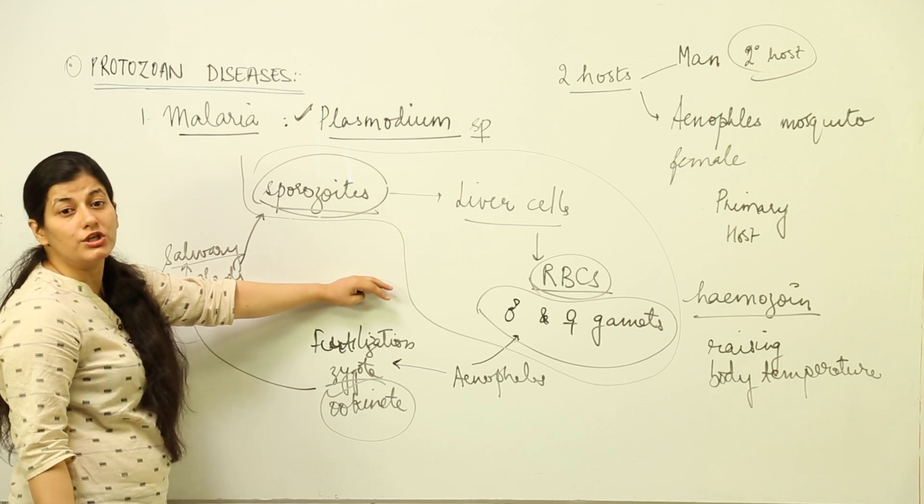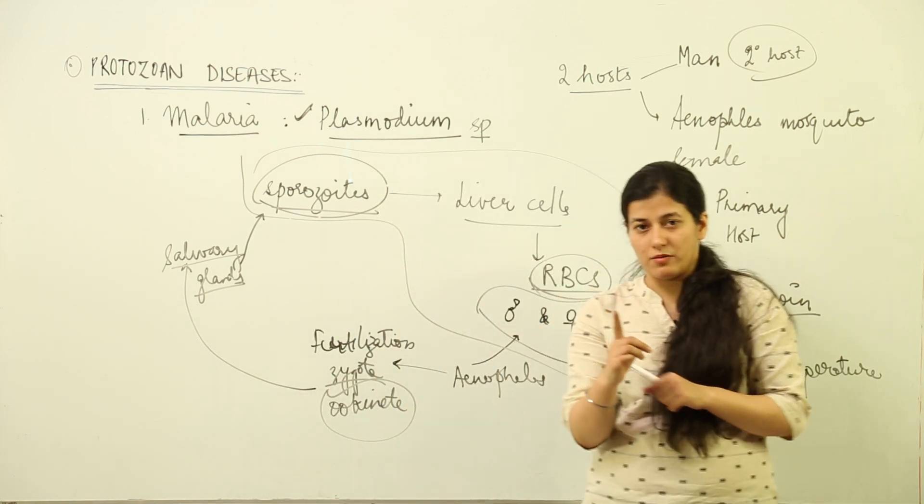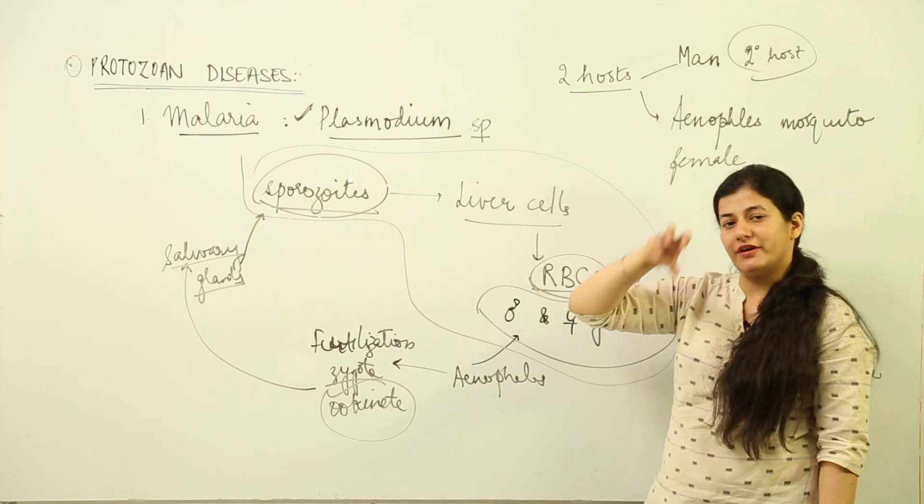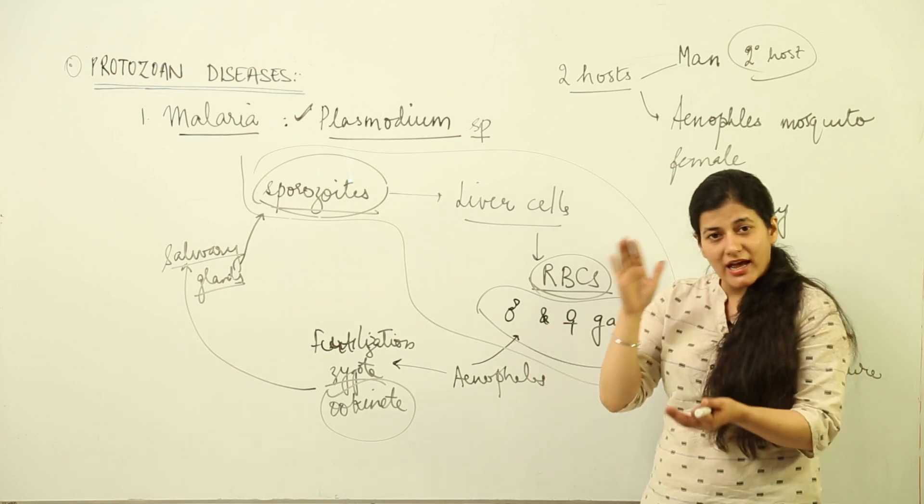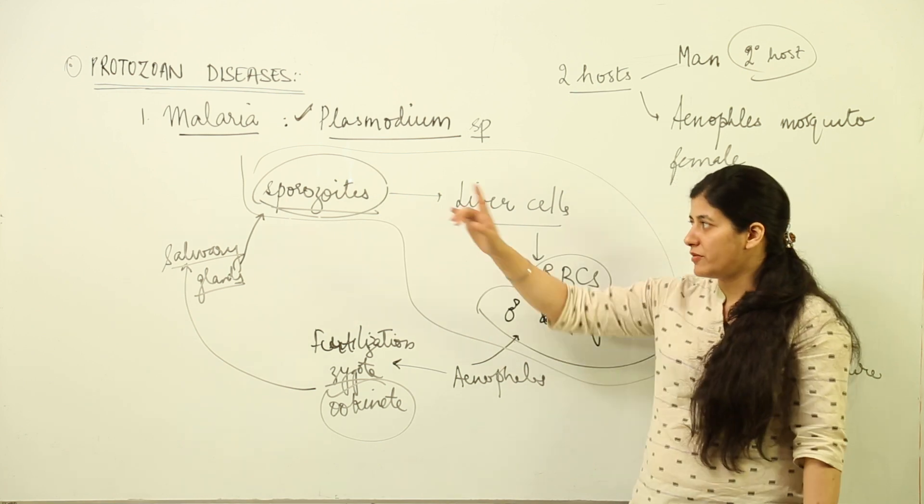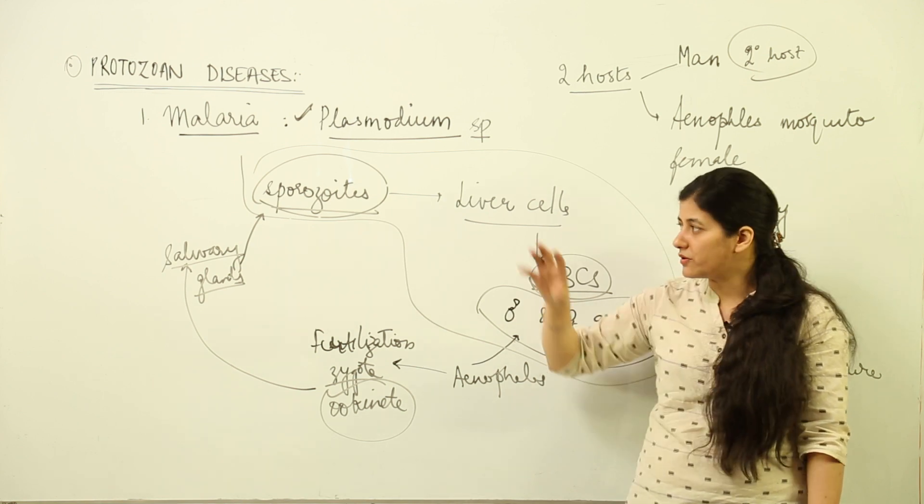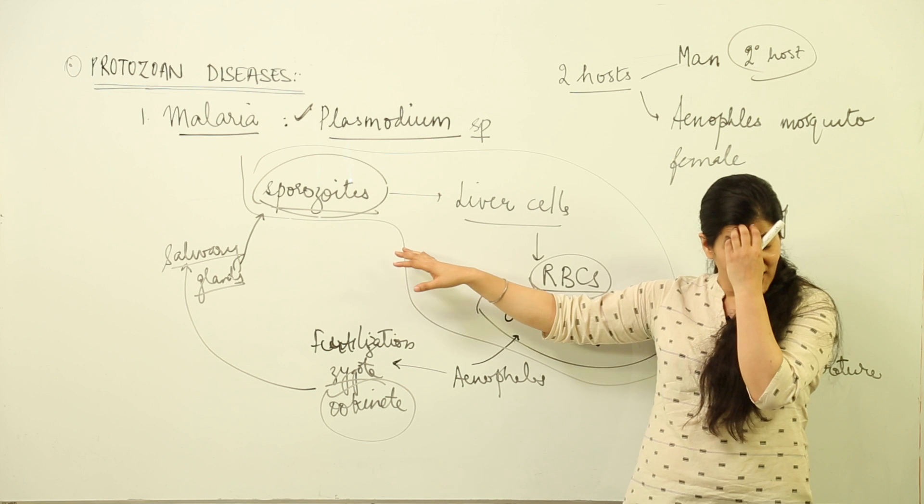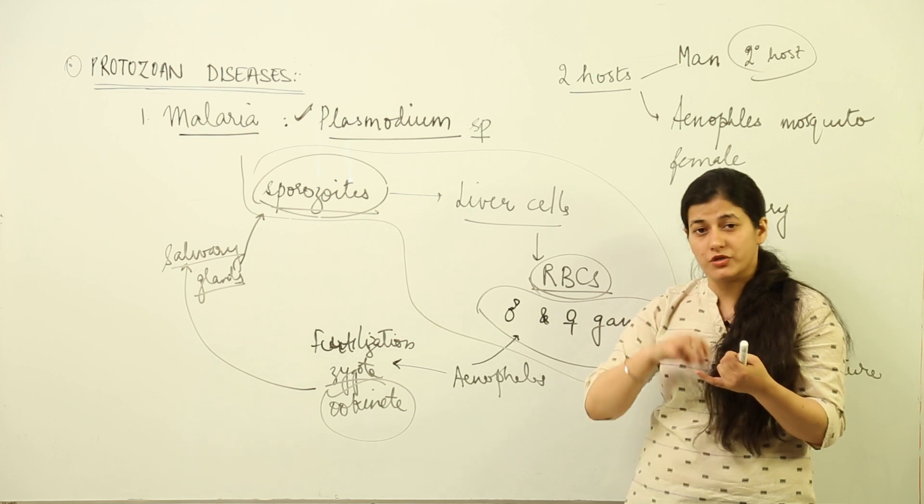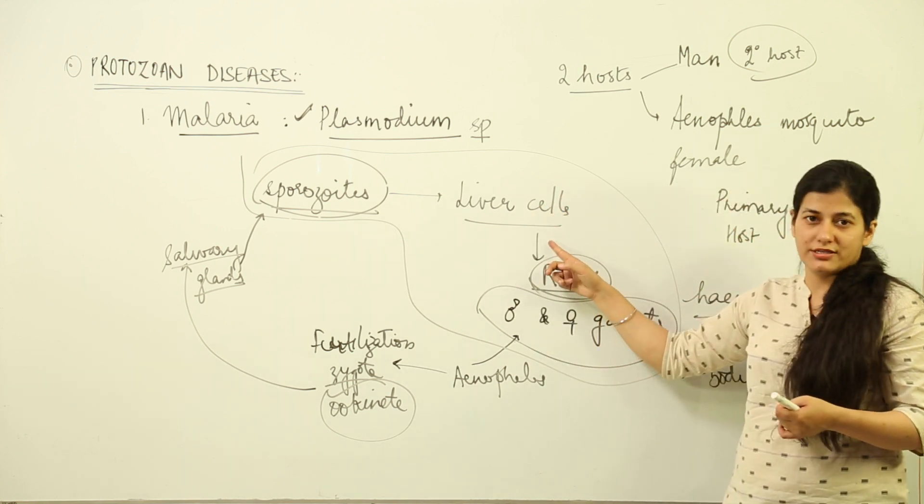In the salivary glands, they get converted to sporozoites, and these sporozoites are transferred to the next human being whenever the mosquito bites someone else. So this was the primary host. Suppose there is an Anopheles female mosquito infected by Plasmodium. The Plasmodium entered the female Anopheles in its gametic stage. Fertilization takes place and formation of sporozoites occurs inside the salivary glands.